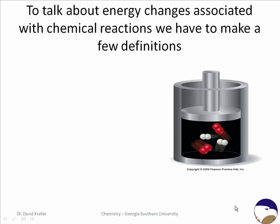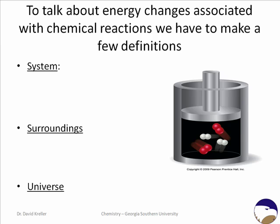Now that we have reviewed a little bit about the properties of energy and the way energy behaves in physical systems, we're ready to move on and talk about how energy behaves within chemical systems. We're going to next make a few definitions — define a few words that we're going to use when we talk about thermochemistry. We're going to define the words system, surroundings, and universe.